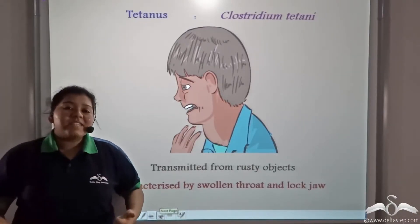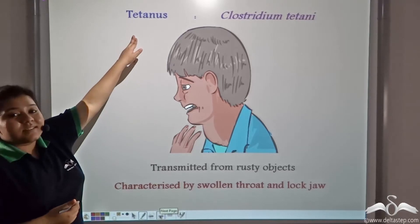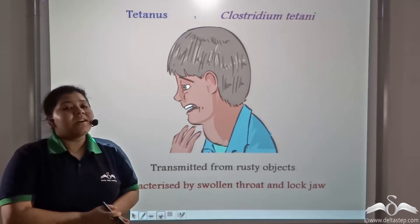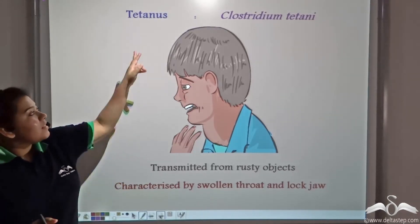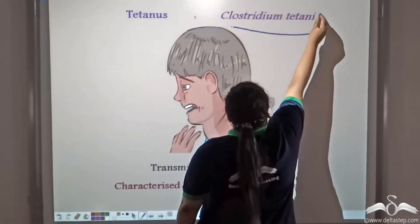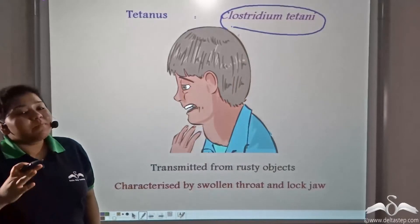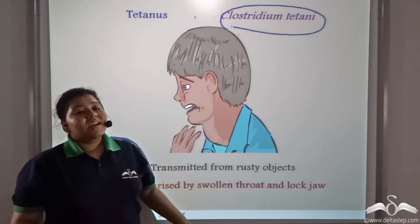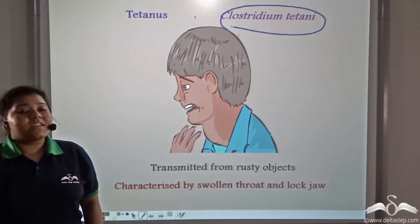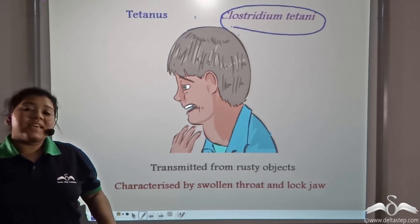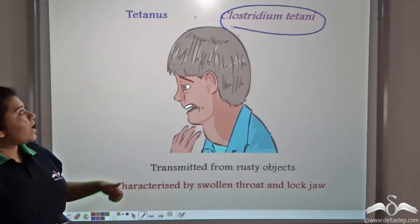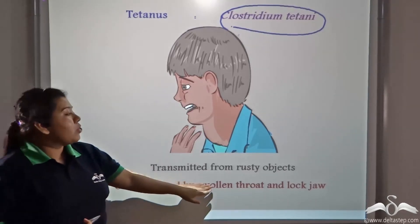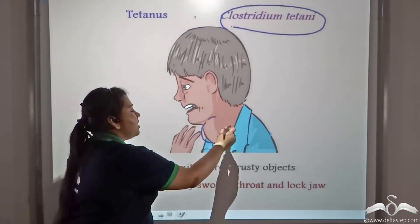The third disease the DPT vaccine caters to is tetanus. Tetanus is caused neither by an airborne nor a waterborne bacteria. The bacterium that causes tetanus, known as Clostridium tetanus, is present in rusted objects. When a rusted object comes in direct contact with human blood, human beings can contract tetanus. The main symptoms are a swollen throat and lockjaw.